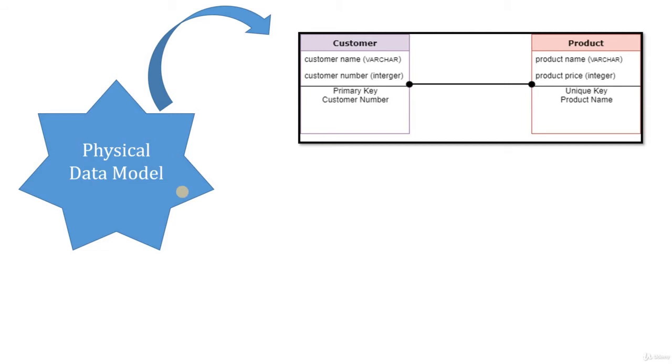A table can have only one primary key, which may consist of single or multiple fields. So this is about what is primary key. Unique key is also more or less the same thing. The only thing is in the unique key, it will have only one unique key per table, and the data within that field will be unique in nature. You will learn about this primary key and unique key in the later session.